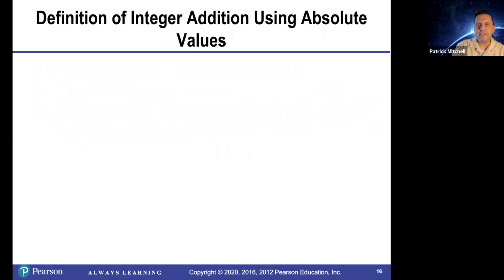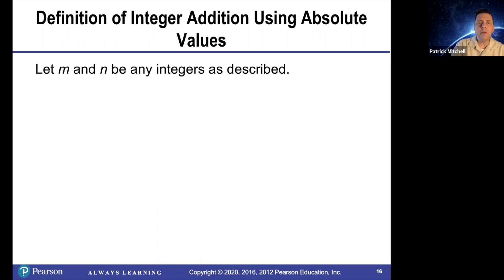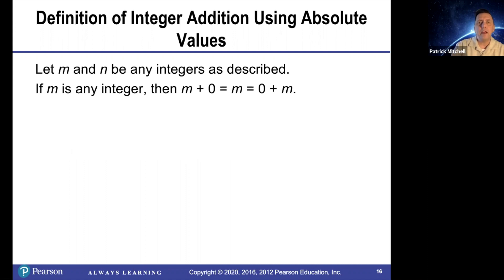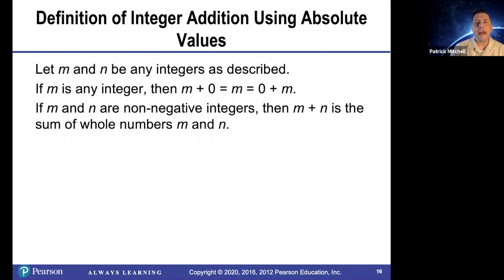Definition of integer addition using absolute values — and again, I would not recommend teaching it using this. Let m and n be any integers. If m is any integer, then m plus zero and zero plus m are both equal to m. If m and n are non-negative integers, then m plus n is the sum of the whole numbers m and n.